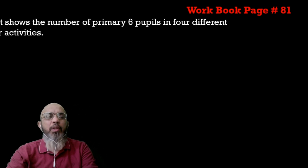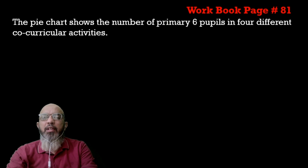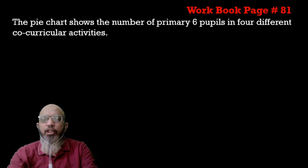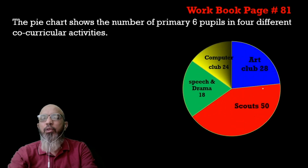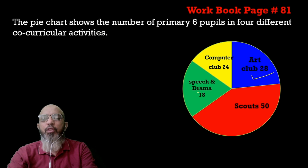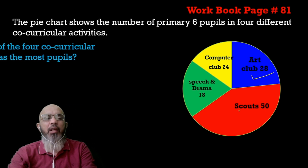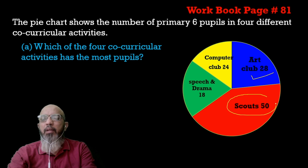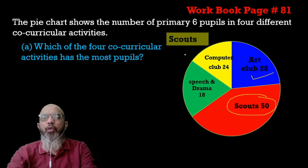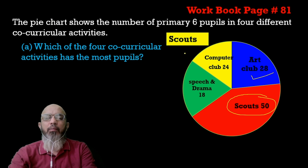The question is: the pie chart shows the number of Primary 6 students in four different co-curricular activities. The art club has 28 students, the computer club has 24, speech and drama has 18, and scouts has 50. The question asks: which of the four co-curricular activities is the most popular? It is very visible that scouts has 50 — the most — so the answer is scouts is chosen by the most people.